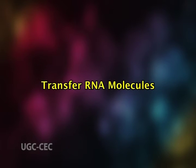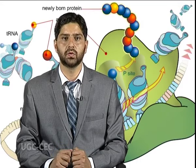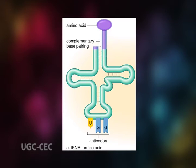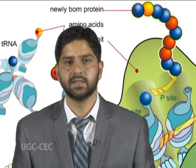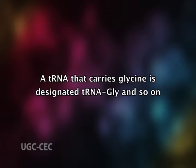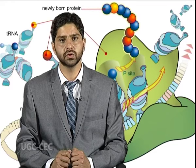Number two: transfer RNA molecules. All cells contain a set of transfer RNAs, each of which is a small RNA molecule. The tRNAs, by binding at one end to a specific codon in the mRNA and at their other end to the amino acid specified by that codon, enable amino acids to line up according to the sequence of nucleotides in the mRNA. Each tRNA is designated to carry only one of the 20 amino acids used for protein synthesis — a tRNA that carries glycine is designated as tRNA-gly, and so on. Each of the 20 amino acids has at least one type of tRNA assigned to it, and most have several tRNAs.